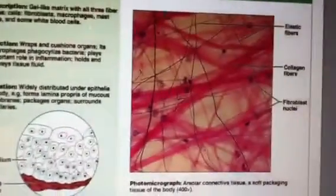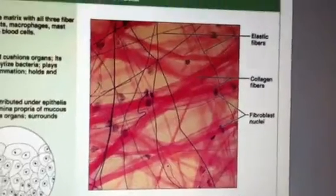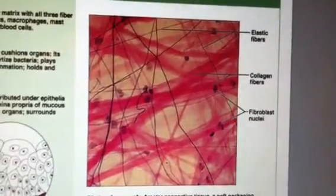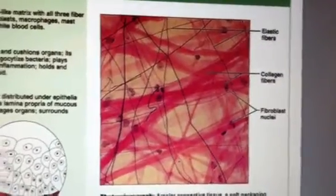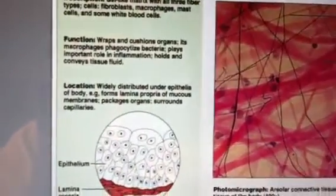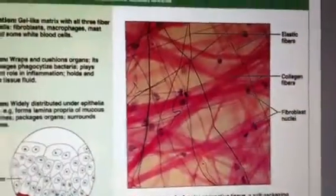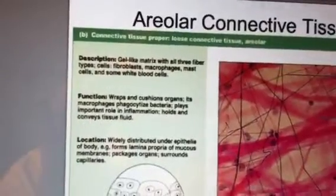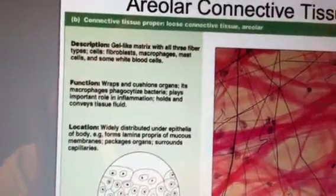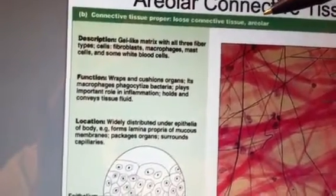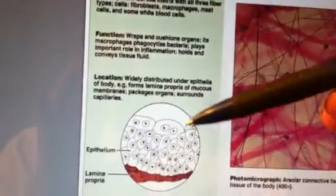This is looking at something called areolar tissue, so you want to look at the picture. It has elastic fibers, collagen fibers, all these fibers add strength to this particular type of tissue. And you want to familiarize yourself with the picture on each one of these slides, and the overall name, and basically where it is in the human body.